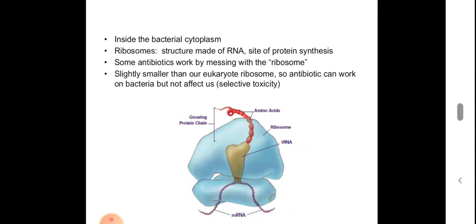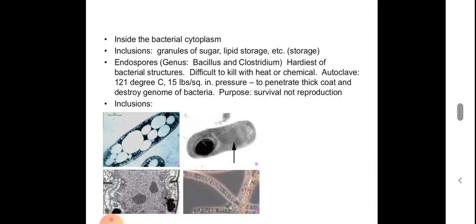Inside the bacterial cytoplasm we can see ribosomes. This ribosome is different from and smaller than the eukaryotic ribosome. There are also antibiotics which work against these ribosomes by inactivating them. Next, about inclusions: we can see many inclusion bodies inside the bacteria, such as granules collecting sugars, lipids, etc. These are known as inclusion bodies, and pictures show some of the inclusion bodies inside the bacterial cell.